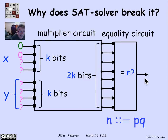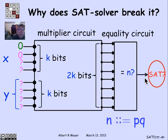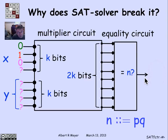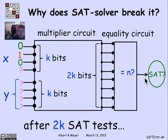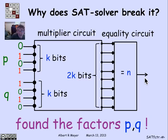Now try setting the second input bit to 0 and ask the SAT tester: is it possible to fill in the remaining digits to get two numbers x and y that multiply to produce n and output 1? The SAT tester says no — this is an unsatisfiable circuit; you can't get a 1 out of it anymore. That tells me I have to set the second bit to 1 in order to have a factor of n. Then go to the third bit, ask whether 0 works. The SAT tester says yes, so I fix 0. I now know the first three bits of x, and I go on.